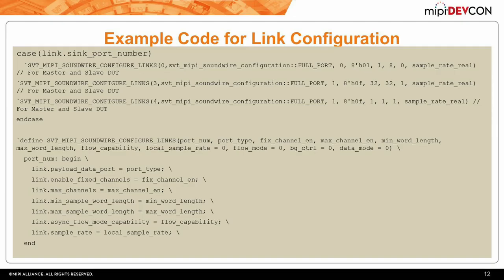Here is an example of how you configure your devices. For a sink device with three ports, we provide a macro that handles the configuration and sets it for that particular port. This code is taken from the example test bench. Here we set the port number, the kind of port it is, and other relevant fields important for that port—for example, fixed channel, min or maximum word length, flow capability, sample rates, etc. You basically do only this, and everything else—all test cases—will be tuned accordingly. If you set ports 0, 3, and 4, the test cases will not generate tests running on port number 1.